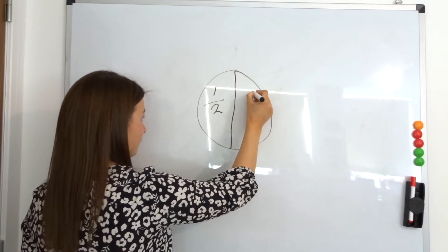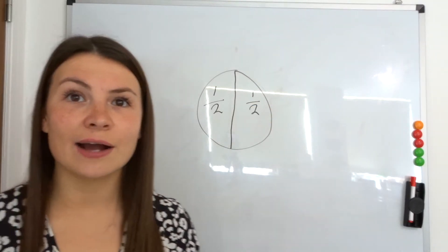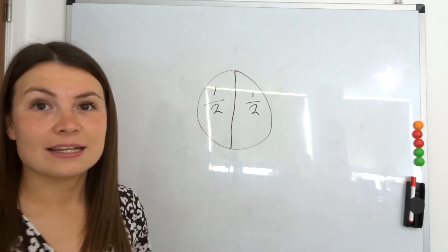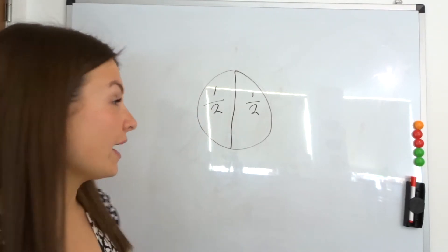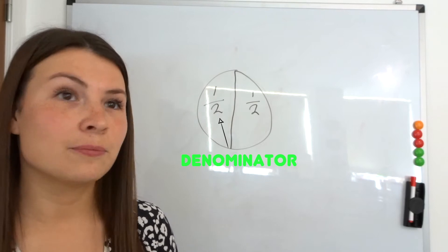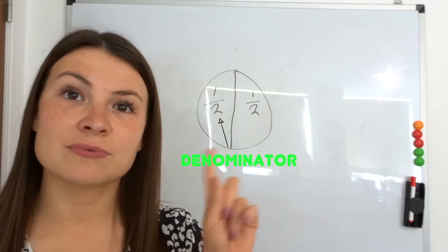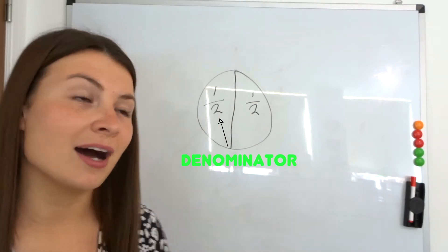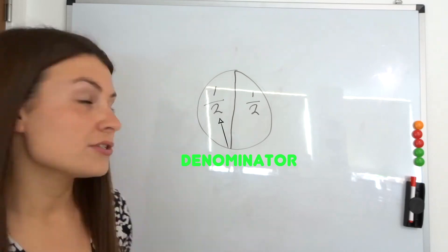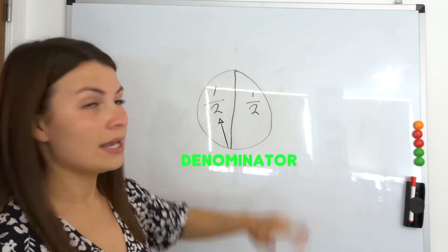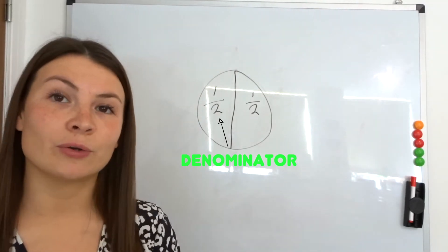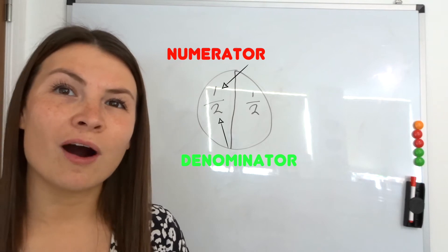Now, who could tell me why the number on the bottom of this fraction is two? We actually call this the denominator. So the number on the bottom is the denominator. Why is it two? Good - because we've got two equal parts. So the number on the bottom, the denominator, is always how many parts we have got. For this circle we have got two equal parts, so the denominator is two.